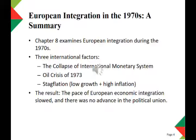The first international factor was the collapse of the international monetary system. The collapse started in 1971 with U.S. President Richard Nixon's decision to temporarily suspend the U.S. dollar's convertibility to gold. After about two years, the whole system collapsed and the gold base sank.